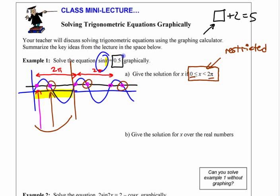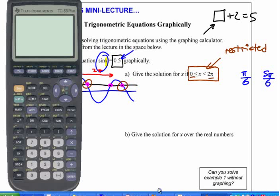You actually, since this is 0.5, this is actually one of those special triangle ones. You could actually solve this one with exact values. You could say it's π over 6 and 5π over 6 if you wanted to. But let's pretend that we don't know anything about those right now.